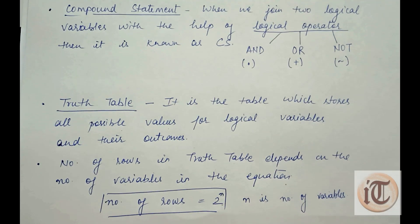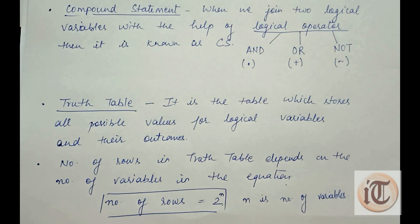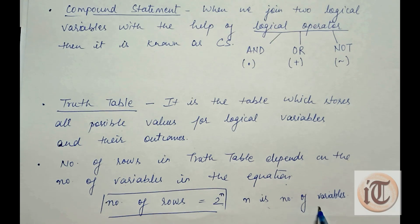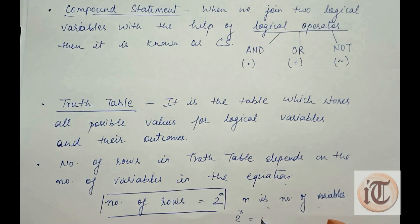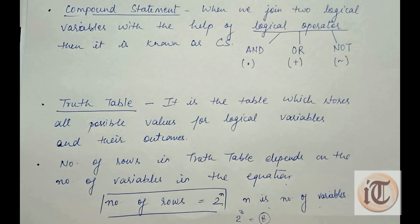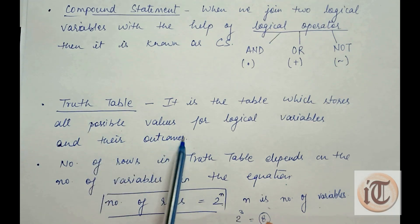Suppose we have three logical statements and we define them with three logical variables: a, b, and c. Therefore there are three variables, and the total number of rows in the truth table is 2 to the power 3, which is 8. So there are 8 total possible combinations, and the outcomes depend on which logical operator is used between the variables.